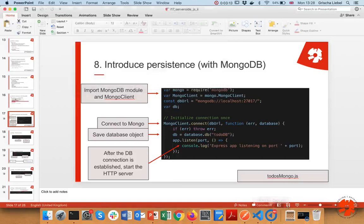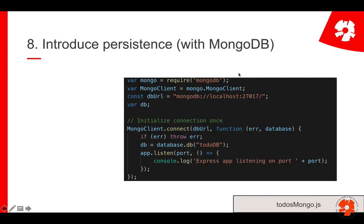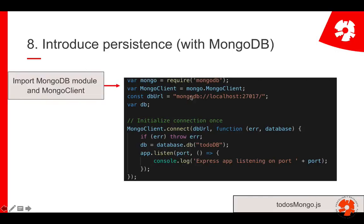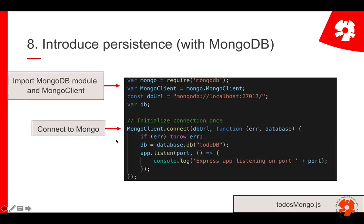In the application, I first include MongoDB by doing require('mongodb') and importing the MongoClient. Then I define the URL — in my case, mongodb://localhost:27017. That's the regular address for MongoDB. You can run it on a different port, but that's the standard. Then you connect using MongoClient.connect with the URL.